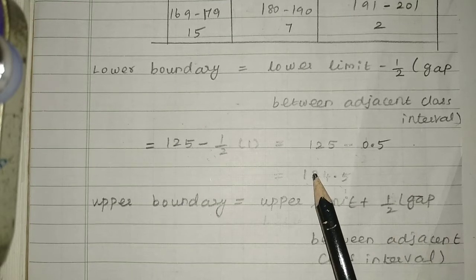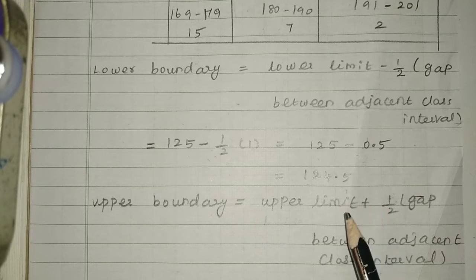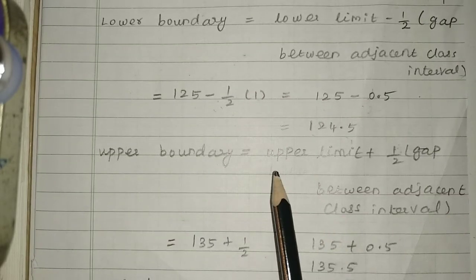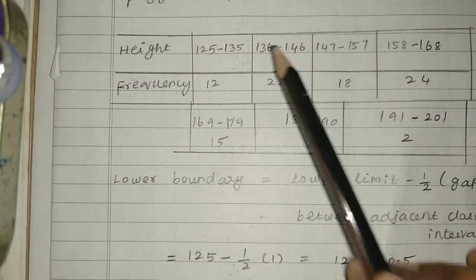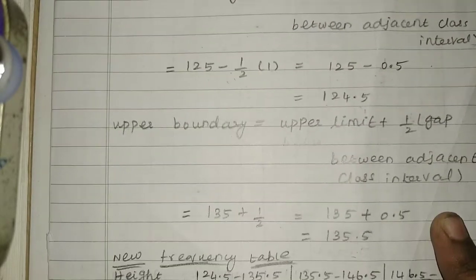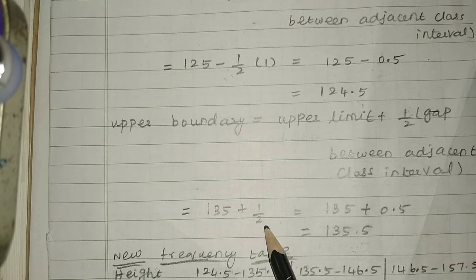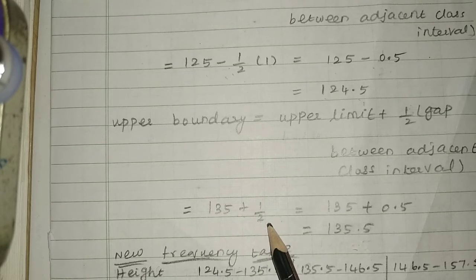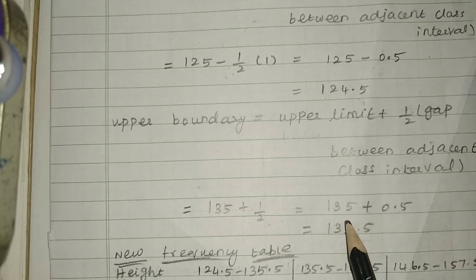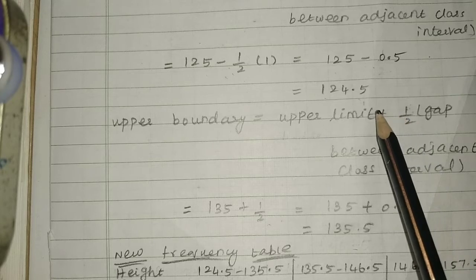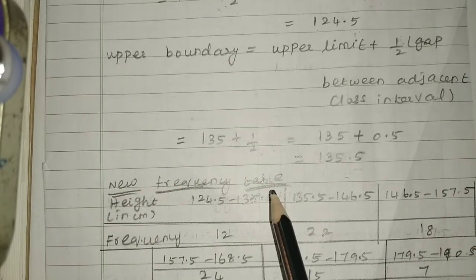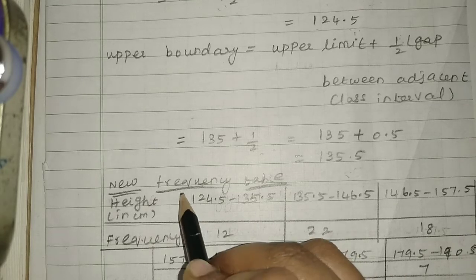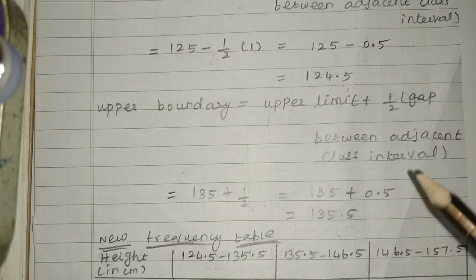So the lower boundary value is 124.5. For the upper boundary, the formula is: upper boundary = upper limit plus half of the gap between adjacent class intervals. So 135 plus 0.5 = 135.5. Each boundary increases by 0.5. The new table is framed with class intervals starting from 124.5 to 135.5.